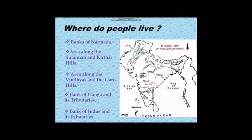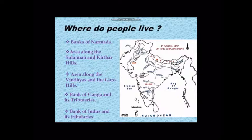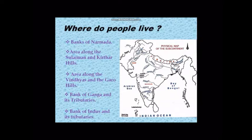The north of the Vindhyas was the place where rice was first grown. On the banks of the Indus river and its tributaries, some of the earliest cities flourished around 4700 years ago. About 2500 years ago, cities developed on the banks of the Ganga and its tributaries. In ancient times there was a large and powerful kingdom named Magadha, situated to the south of the Ganga and along its tributaries, and its rulers were very powerful and set up a large kingdom.